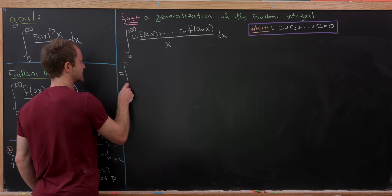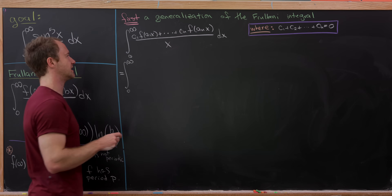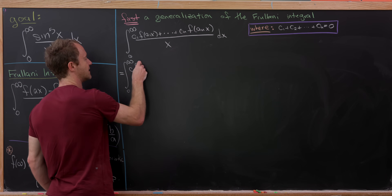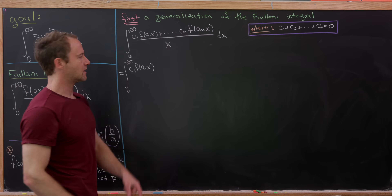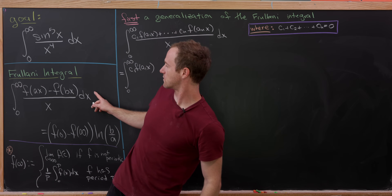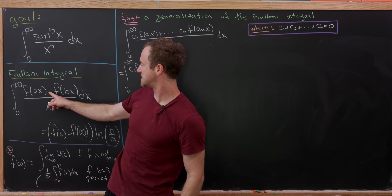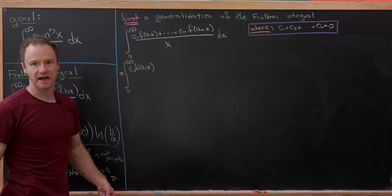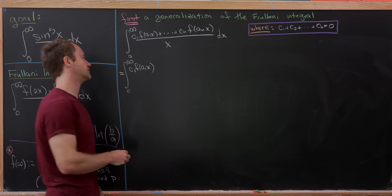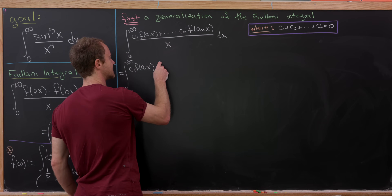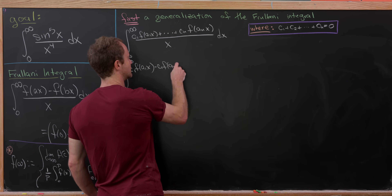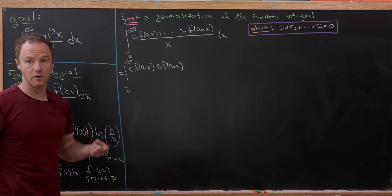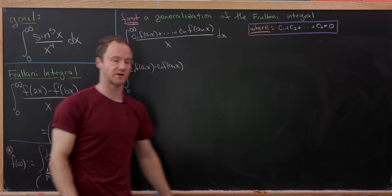We write the integral from zero to infinity, starting with c₁f(a₁x). In order to use the Frulani integral, we need the same coefficient attached to another f term, so we use f(a₂x): giving c₁f(a₁x) minus c₁f(a₂x) over x. That piece can be evaluated by the Frulani result, but we're not done because we have more terms left in the numerator.